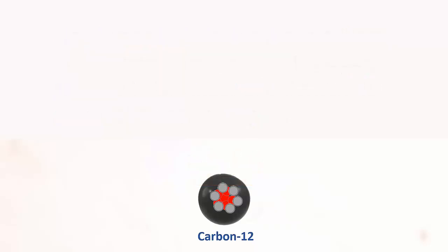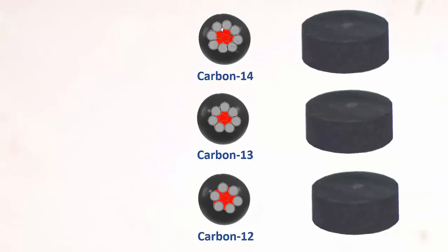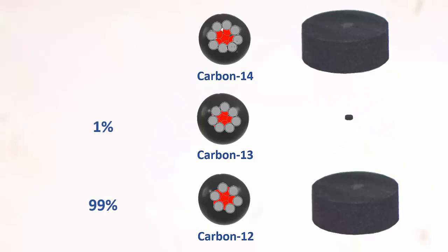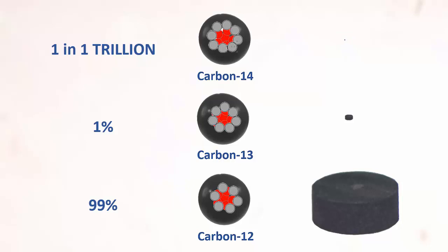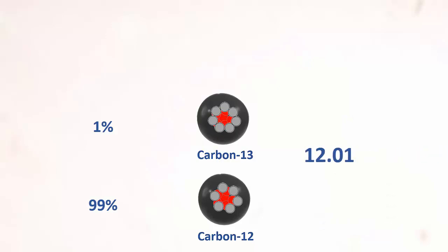What about the element carbon itself? What's its average or relative atomic mass — not just the carbon-12 isotope, but taking into account all its isotopes found in nature? About 99% of naturally occurring carbon atoms are carbon-12, and only 1% are carbon-13. Less than one in one trillion is carbon-14, so we can ignore it when averaging. So carbon's relative atomic mass is very close to 12 — it's actually 12.01, which leans 99% closer to 12 than to 13, as you might expect.